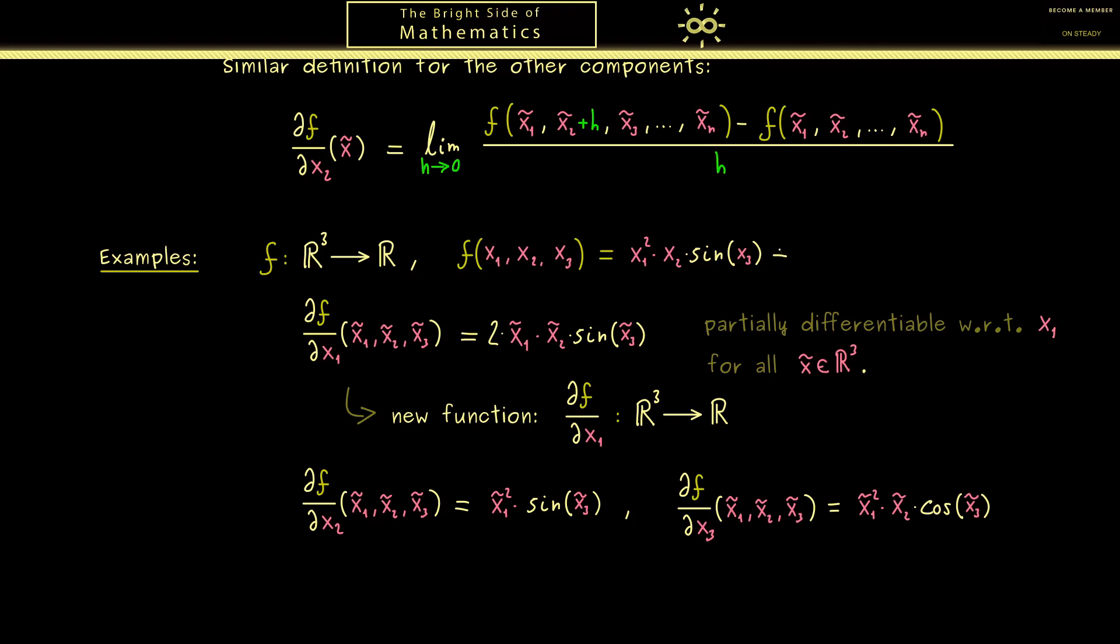So a good question would be what would change if we add here for the original function x₃. So now we have a different function and obviously for the partial derivative with respect to x₃ we have plus 1 here. However, all the other partial derivatives will not change because x₃ is just a constant for x₁ and x₂. Namely by taking the derivative the constant will vanish. Hence when you calculate a lot of things this is something you have to keep in mind.